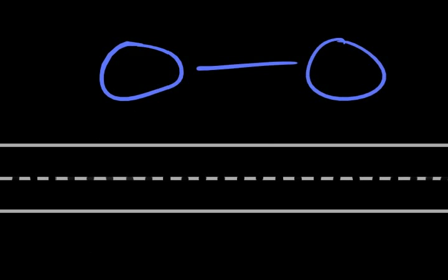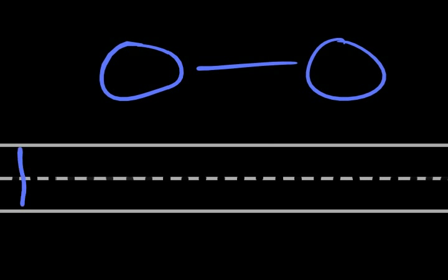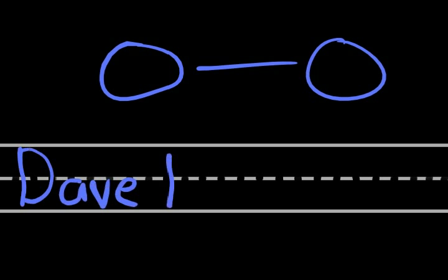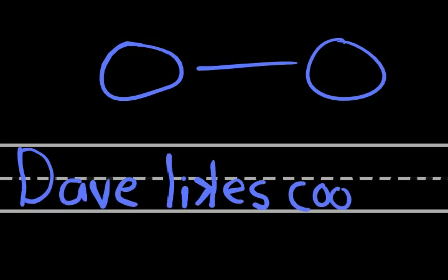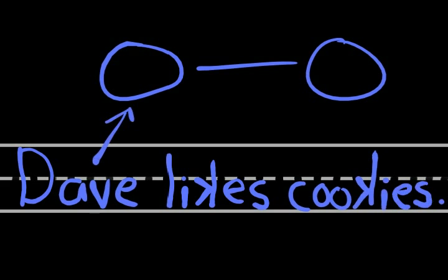If you remember back to your third grade English class, this should sound pretty familiar. The subject, predicate, object approach is how most Western languages create basic sentences. The subject refers to the thing you are describing. The predicate usually refers to an attribute of that thing. And the object is the thing you are referring to with the predicate. In this case, we have constructed a simple statement: Dave is the subject, likes is the predicate, and cookies is the object. Using this simple idea, we can describe anything — and that is basically what RDF enables us to do.